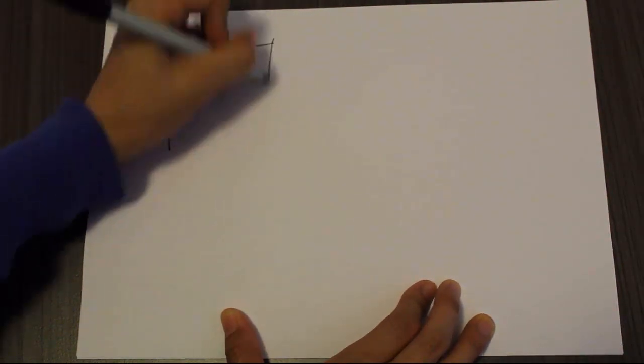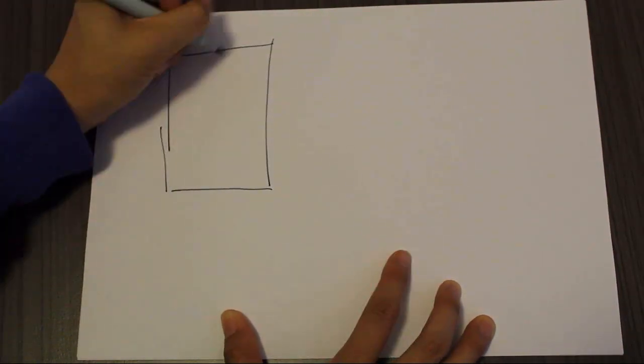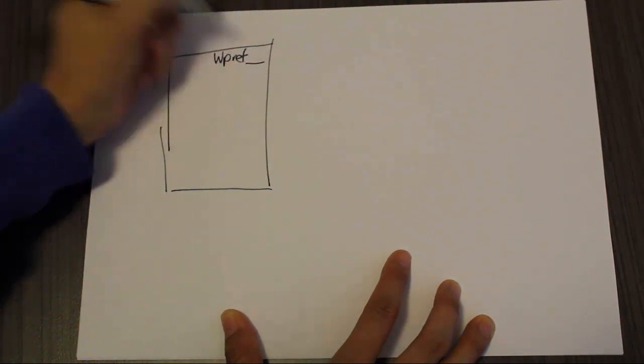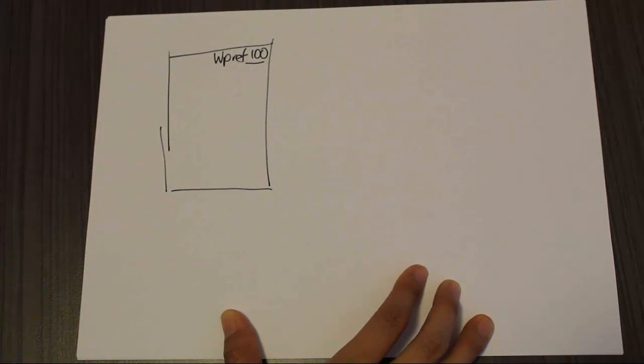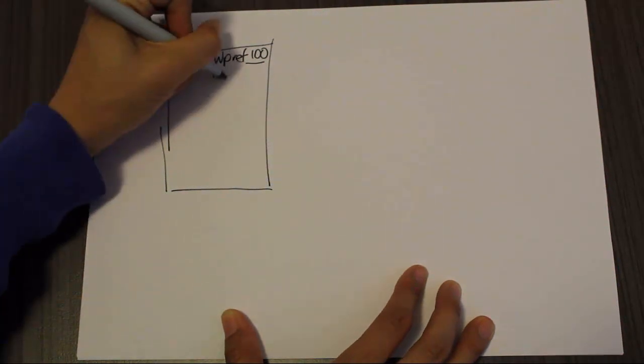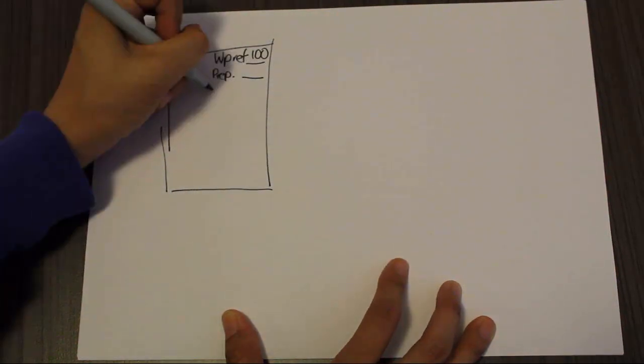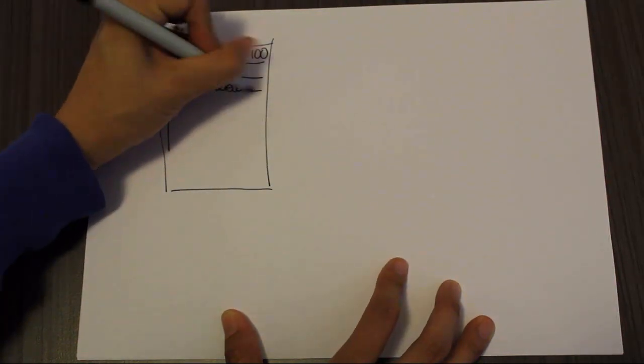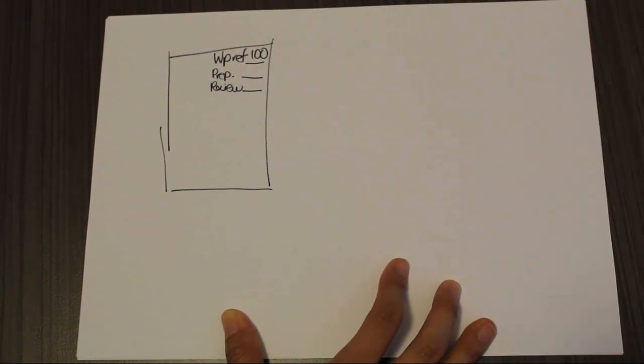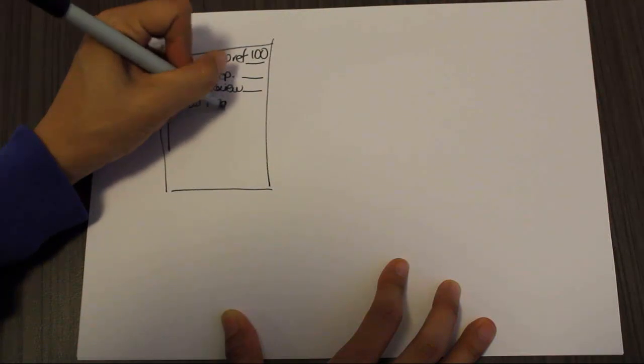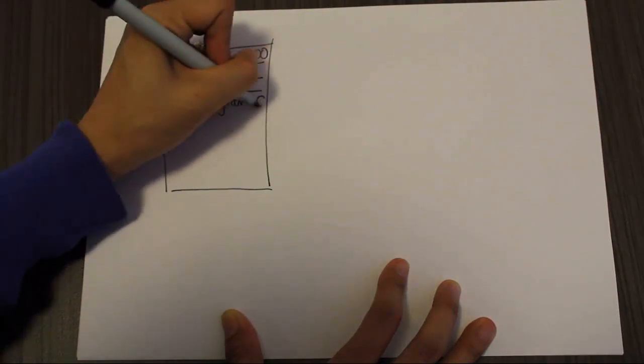All right, so let's have a look at drawing two particular work papers. Now, the work paper reference is always in the top right-hand corner. I'm just going to use 100. So we know that from previous files or videos we need to know who prepared the work paper and who reviewed the work paper as well.